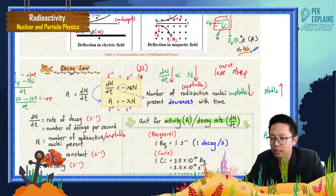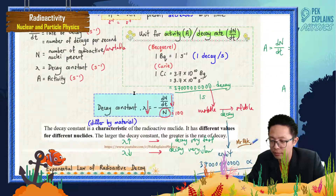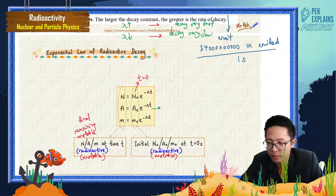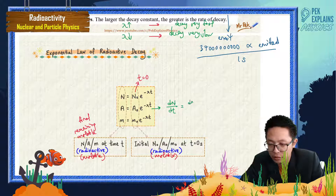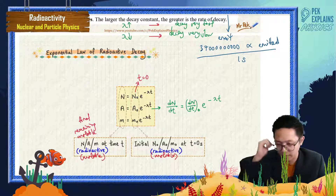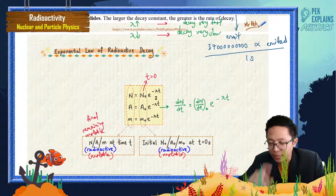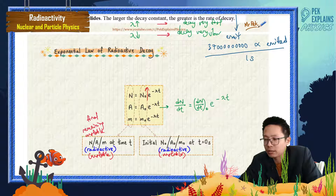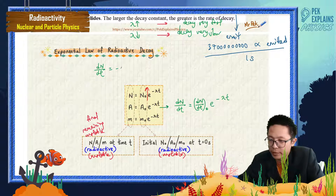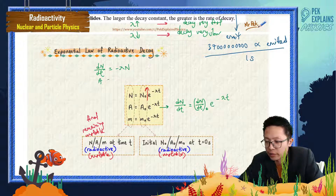Last time we learned about the decay law: dN/dt equals negative lambda N. So activity also equals negative lambda N. We can also write dN/dt as A₀ times e to the negative lambda t — it is the same formula. When you have a lot of sample initially, you have a high rate of decay and high activity. Initially with a high sample, the initial activity is also large.